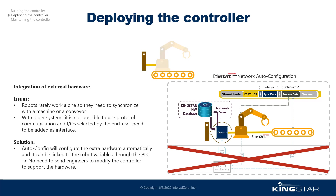Users expect to be able to select extra hardware or connect hardware they already have to the robot, configure it easily, and they don't want to send someone on site to customize the controller software every time. This is where a software PLC inside the robot controller is very useful, because you can expose all the variables of your robot control inside this software PLC and it can access the newly added IOs or drives from the end user. They can then be interconnected directly in PLC language, which most end users are familiar with.